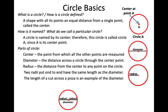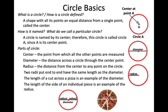A way to think about diameters and radii is to think of pizza. When you cut all the way across a pizza, that's a diameter. Each of the individual slices is made up of two radii. There are an infinite number of radii and diameters.